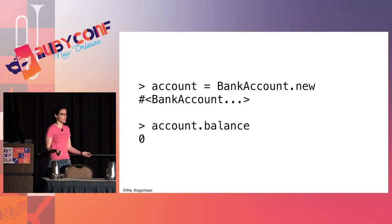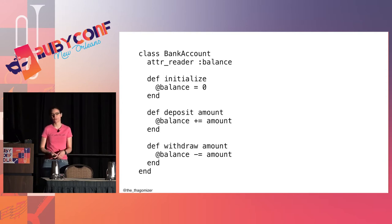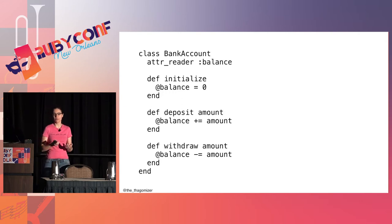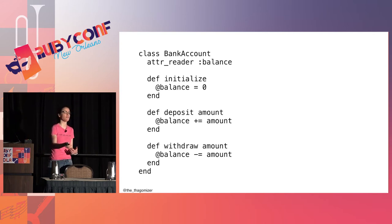A bank account with a balance of zero is pretty much useless, so I'll add ways to withdraw and deposit money. Deposit is a message — it takes an amount and adds it to the balance. Withdraw is the opposite — it takes an amount and subtracts it from the balance. You can see from my IRB output that it works. The data is the balance, and the methods — the behavior — are deposit, withdraw, and initialize. All of these methods modify the internal state of the object, and my IRB process communicates with them by passing messages.